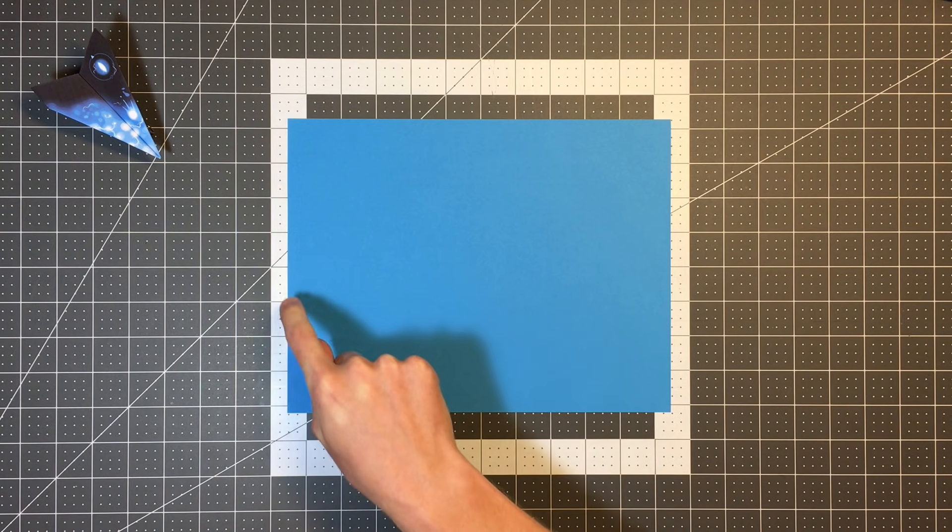As with most of my planes, Plasma Z is folded out of a single sheet. We're going to take a piece of 8 1⁄2 by 11 inch paper, and we're just going to begin by folding it in half from the right edge to the left edge.